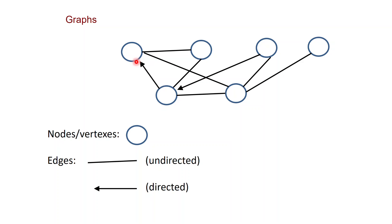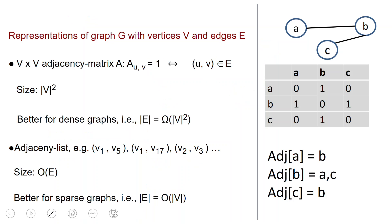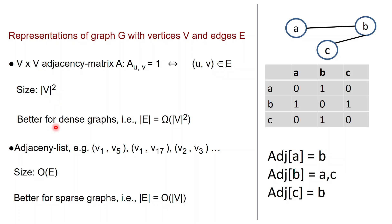There are two common ways to represent a graph. If you have a graph G with vertices V and edges E, you can represent it using the adjacency matrix A. This is a square matrix of side length equal to the number of nodes, and the UV entry of the matrix is one if and only if the edge UV is present in the graph. The size of this representation is quadratic in the number of nodes, so it is better suited for dense graphs — graphs where the number of edges is quadratic in the number of nodes.